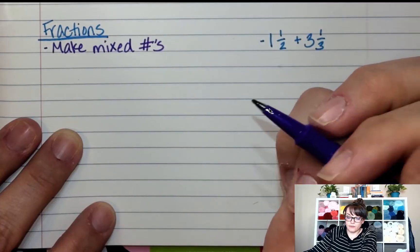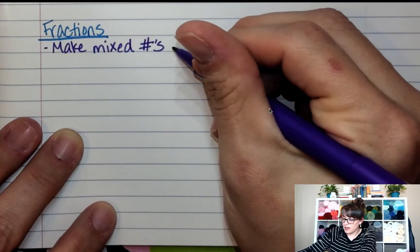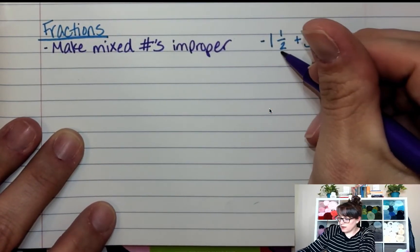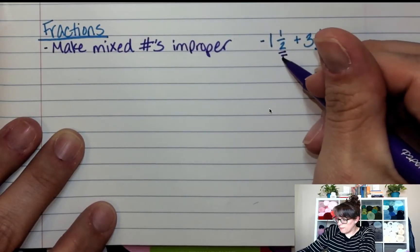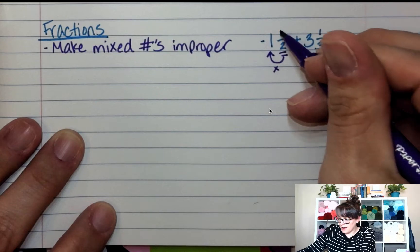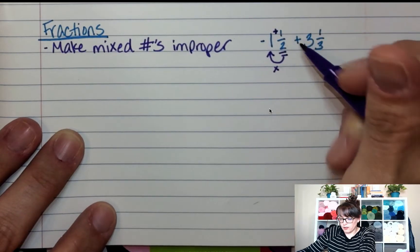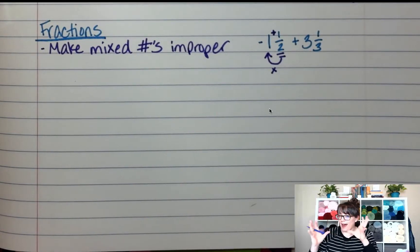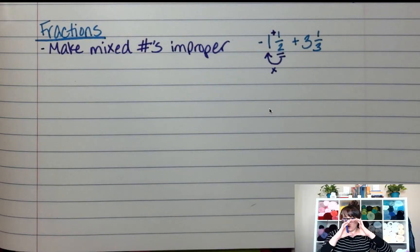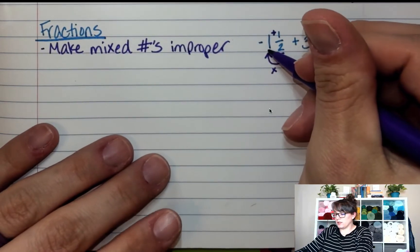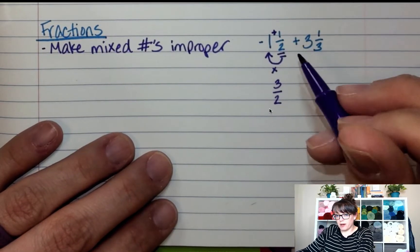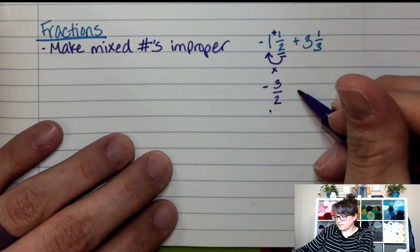So make the mixed numbers improper. And when we do that, you take the denominator, we multiply it by the whole number, and then we add the numerator. Because you have one whole piece and then a half of a piece. So how many halves is that? If you have one whole and then one half, that's two times one plus one is three halves. You keep the bottom number. And this stays negative.